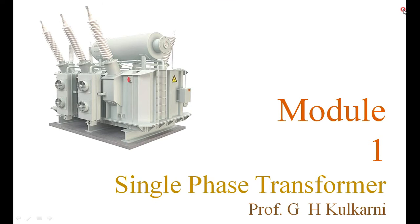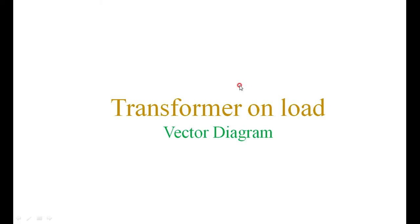In the last session we have seen how we are representing the practical transformer from the ideal transformer. If you add the resistors and leakage reactances to the primary and secondary windings of the ideal transformer, it will become a practical transformer. If this practical transformer is connected to a load, then how to draw the vector diagram for different load conditions — that we will see in this session: the transformer on load.